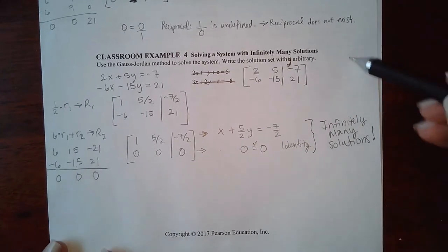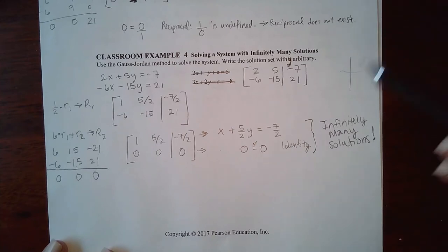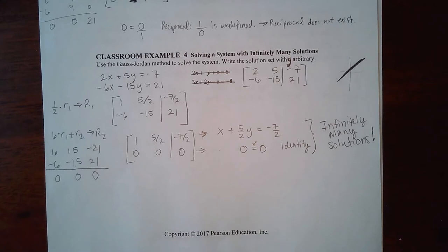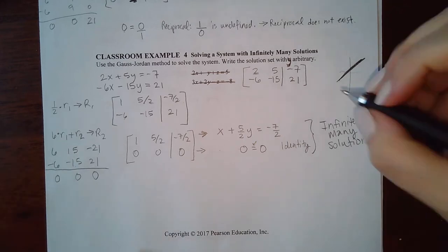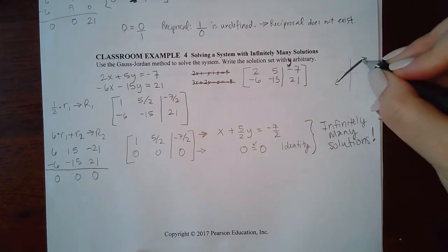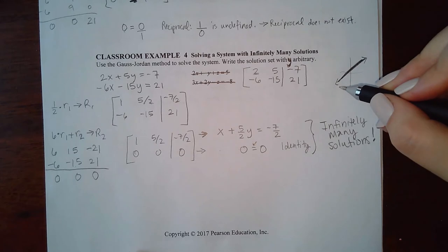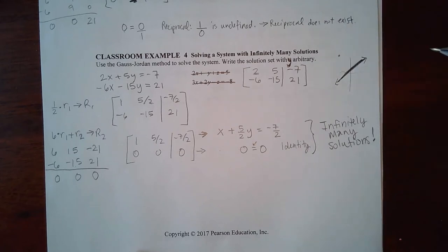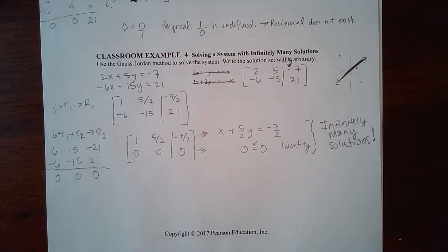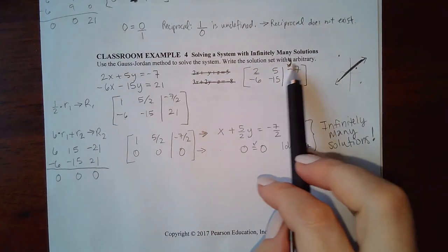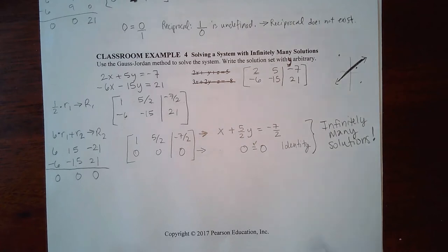Graphically, infinitely many solutions means the two lines are the same line — one lies directly on top of the other. This doesn't mean everything is a solution; there are infinitely many points on that line, but points off the line are not solutions. To express the solution set, you write it with y arbitrary — meaning y remains as y — and then isolate x from the equation.